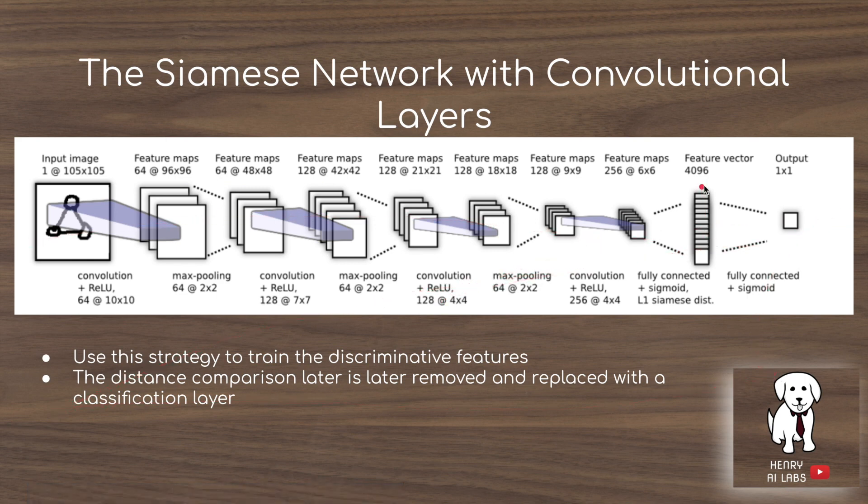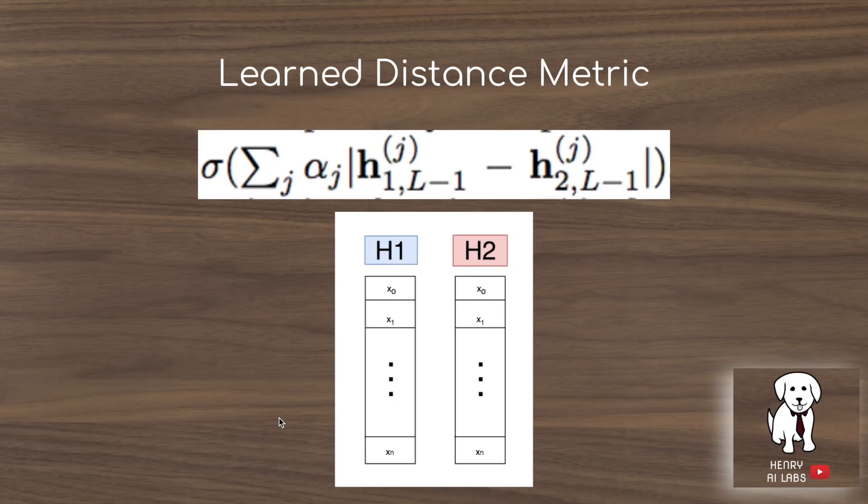At the end, the distance layer is removed and replaced with a classification layer trained to do the classification task with only one labeled image per class.